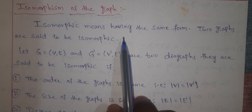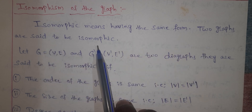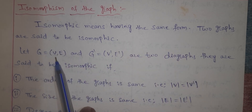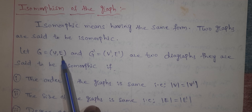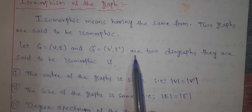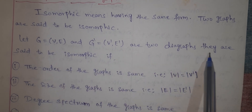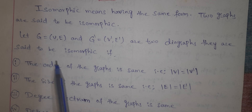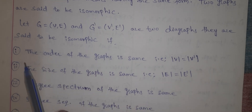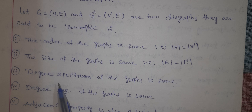Isomorphic means having the same form. Two graphs are said to be isomorphic. Let G equal to V comma E, and G dash equal to V dash comma E dash be two graphs. They are said to be isomorphic if the following five conditions are satisfied.